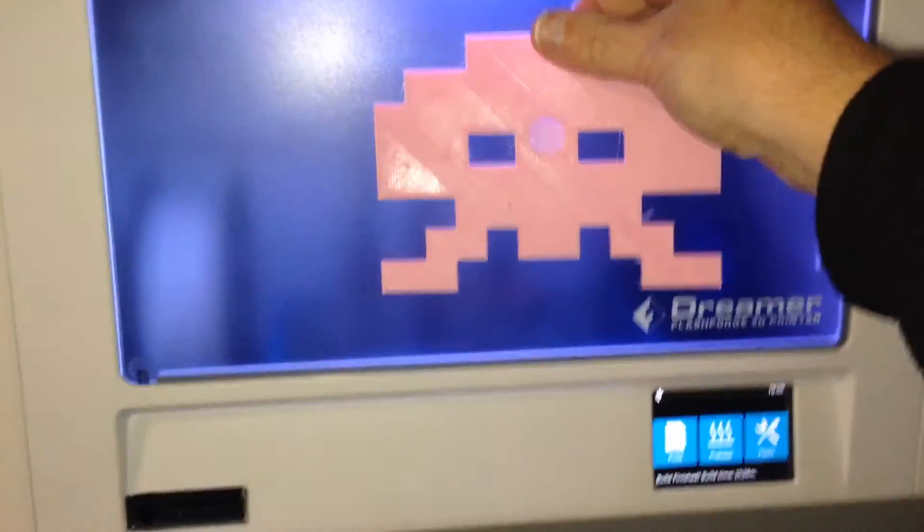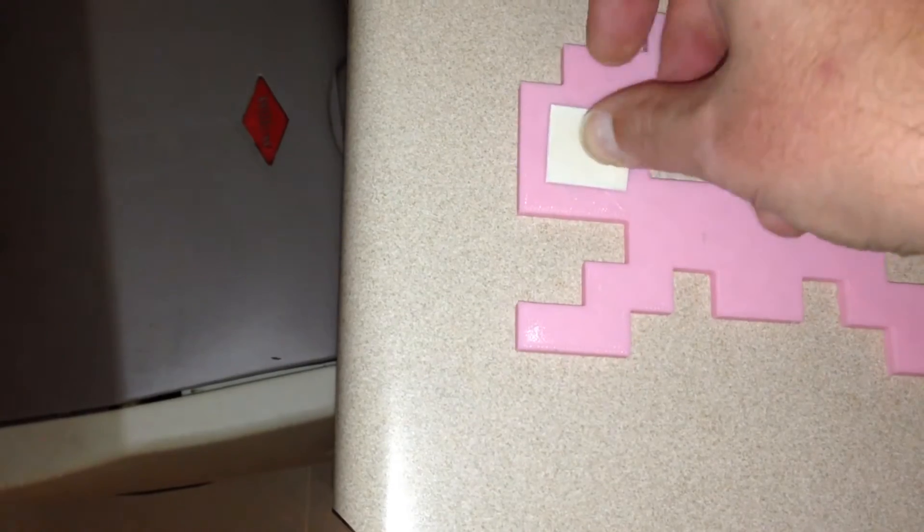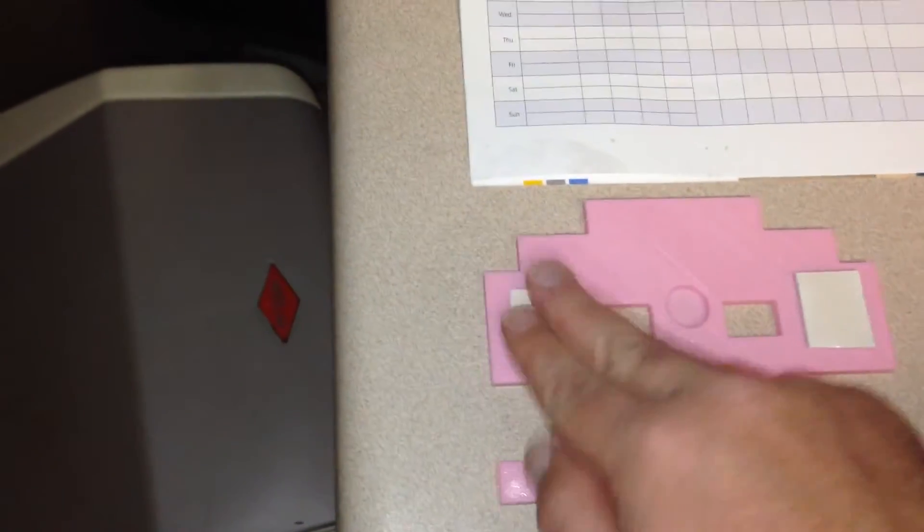So that looks pretty cool. Okay, so we're just going to put some double-sided tape on our Space Invader. All right, just like that and we'll go put it on the wall.